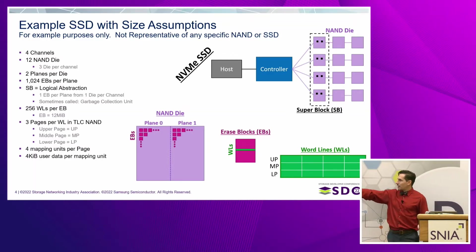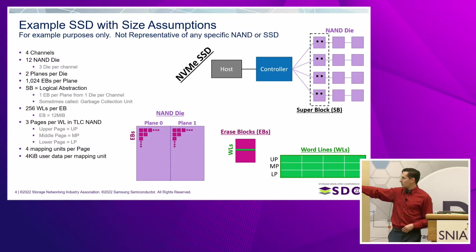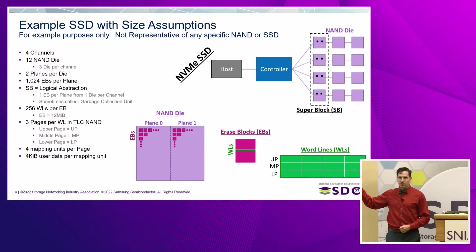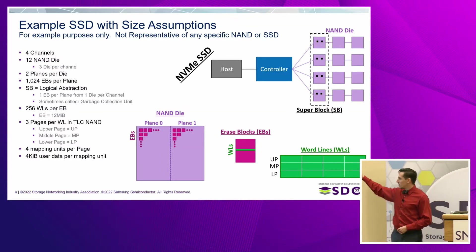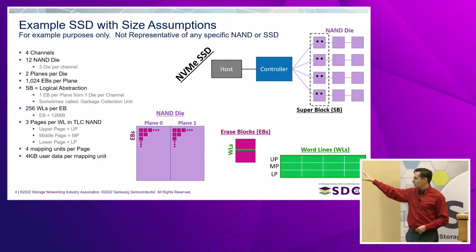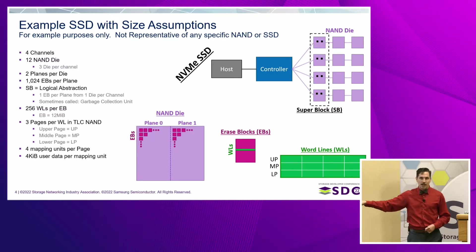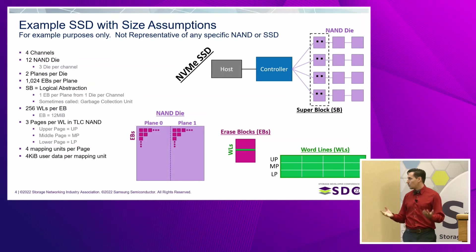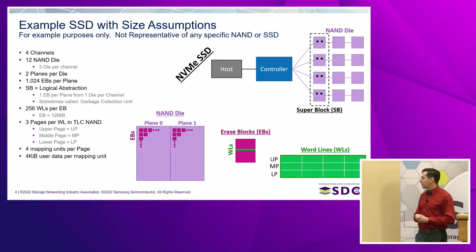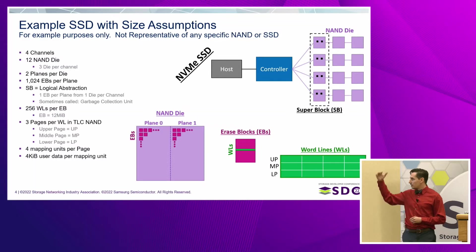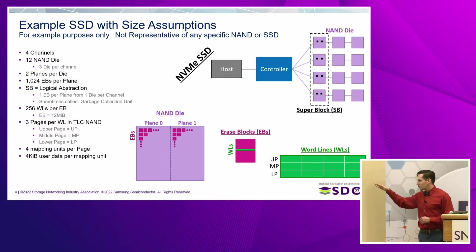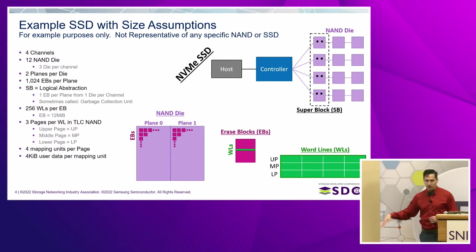Before moving on, I want to go through the images. We have the host, controller, four NAND channels, three die for each channel. Our NAND die has plane zero and one, many erase blocks — 1024. Each erase block is written with word lines, and the word lines are broken down into upper, middle, and lower page.